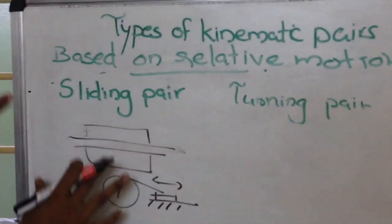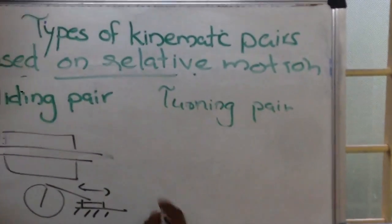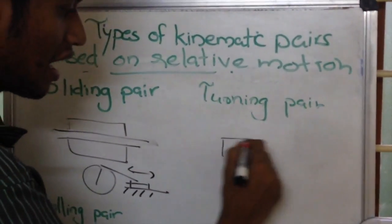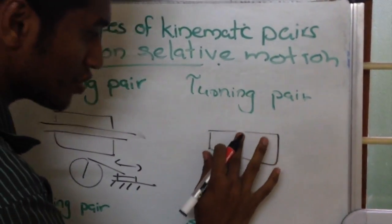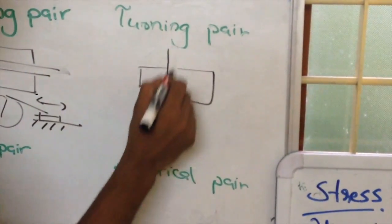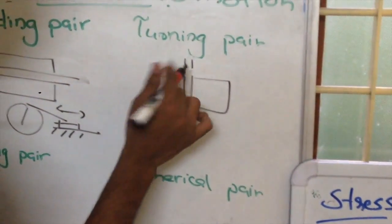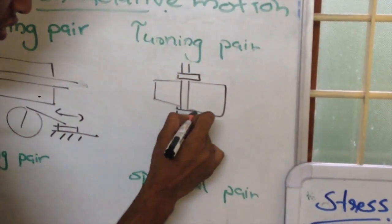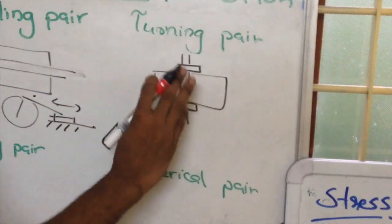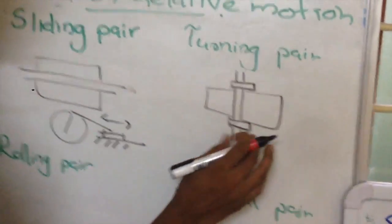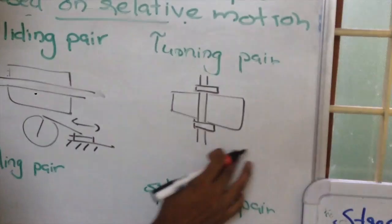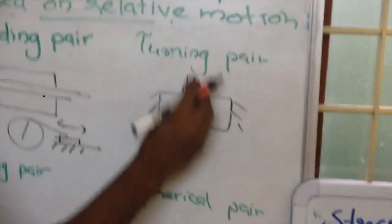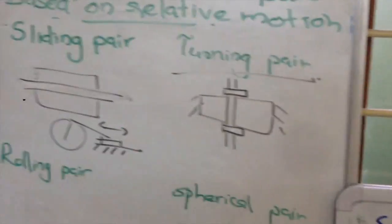Now turning pair means one link is turning with respect to another. That means we are having a link like this and suppose we are having some hole and we are having a circular shaft and this end of the circular shaft has some protruding so that it does not allow the sliding. So here the shaft can only rotate with respect to this link. Let this be some fixed link. So with this fixed link the shaft can only rotate so it is called as turning pair.